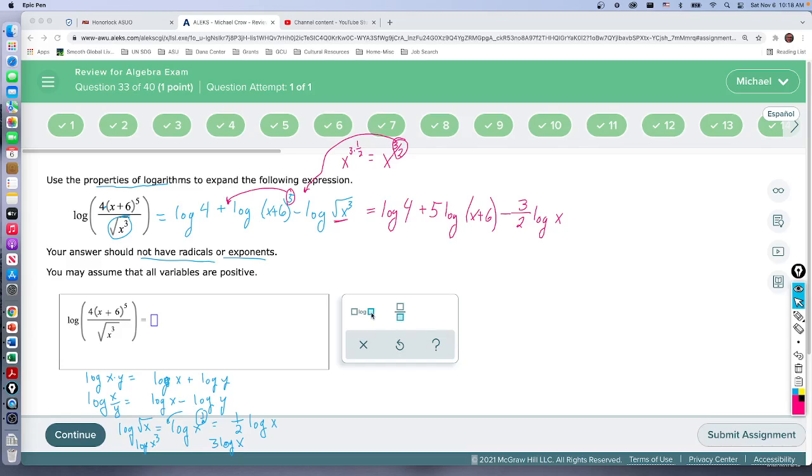Again, be very careful with each of the things here. Alex is very critical on how it counts things. So there's a log base 4, and then I do plus.